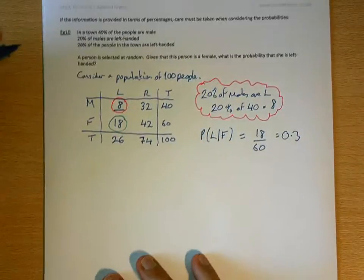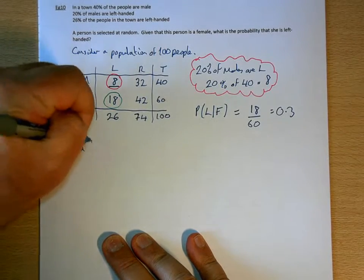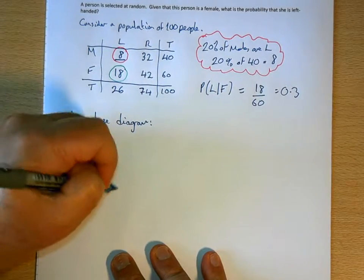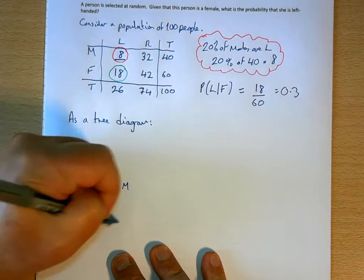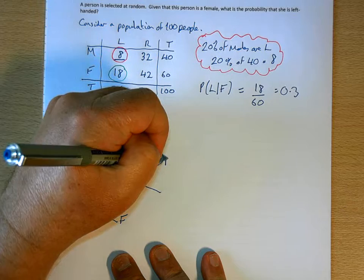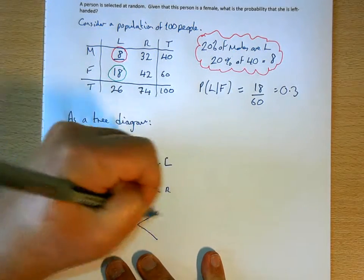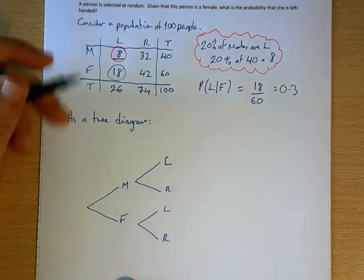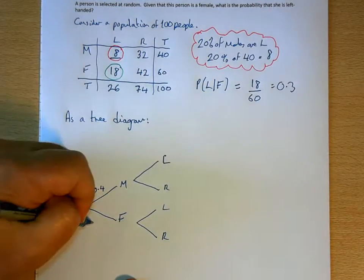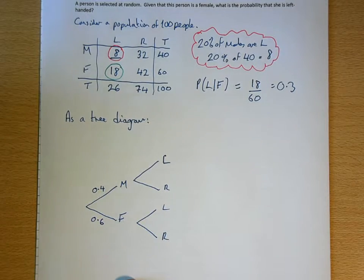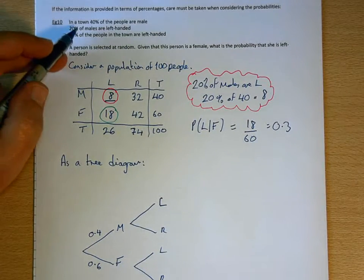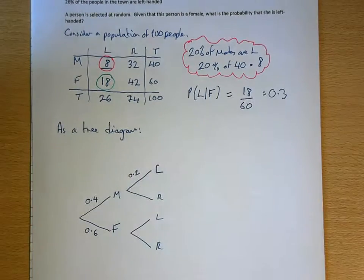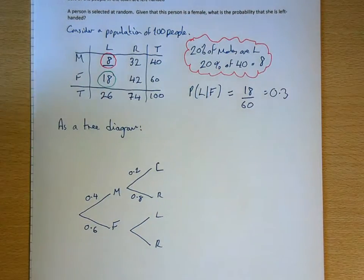Now let's consider it as a tree diagram. We start with male and female branches, then we've got left and right branches for each. We know 40% of the people are male, so there's a 0.4 probability of selecting a male, which means a 0.6 probability of selecting a female. 20% of the males are left-handed, so the probability of left given male is 0.2, meaning 80% are right-handed.